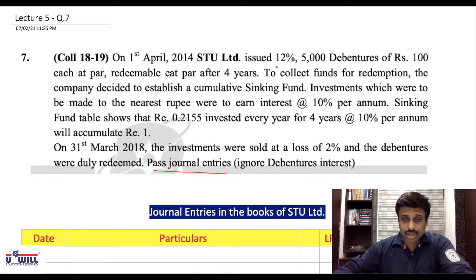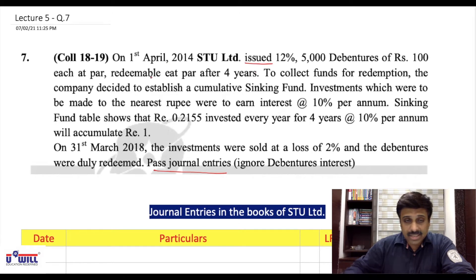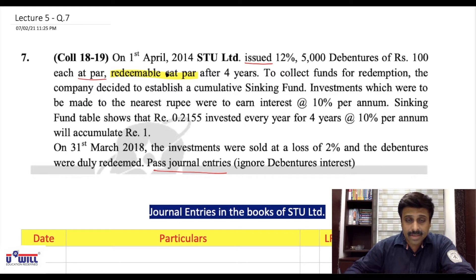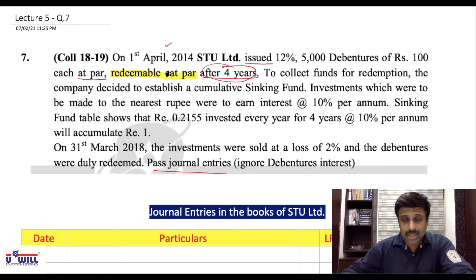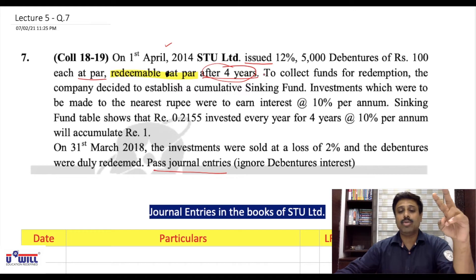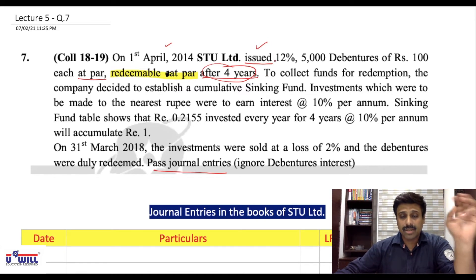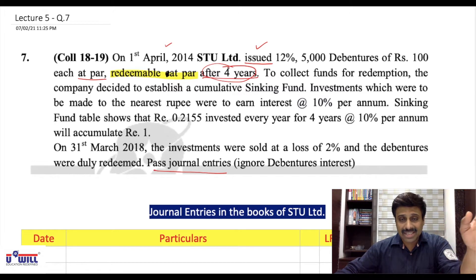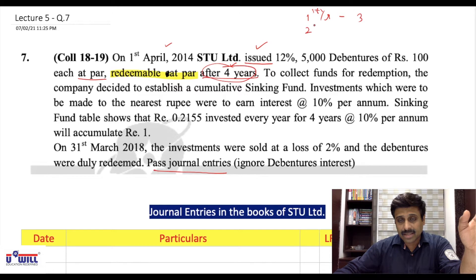On 1st April 2014, STU Limited issued 12%, 5,000 debentures of ₹100 each at par, and redeemable also at par after four years. Now since it's a four-year question under the sinking fund concept: in the first year there are two entries plus one entry of issue — so three entries in the first year. Second and subsequent years have four entries each, except the last year.